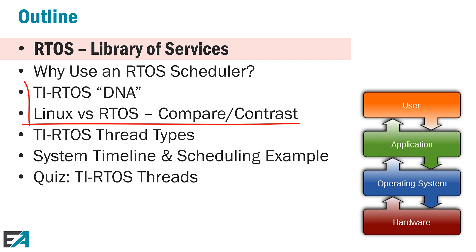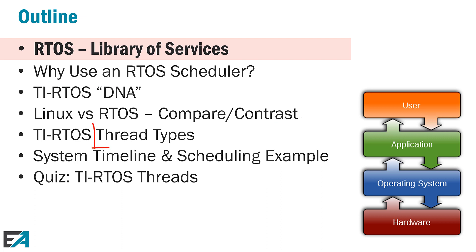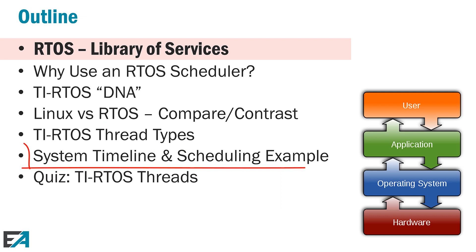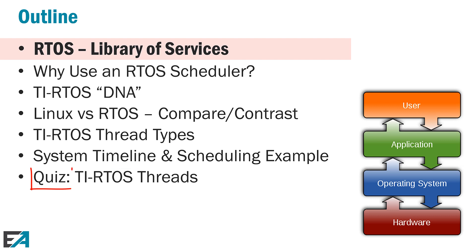Then we will compare and contrast TI-RTOS — or most likely any RTOS — versus Linux. Then we'll get into what are TI-RTOS's actual thread types, what are their names, and what are their group priorities. Then we'll look at the RTOS in action — seeing the different priorities being executed in preemption from the lowest priority thread to the highest priority thread. And then we'll end the chapter with a quiz on a motor control application. That scheduling example really helps bring the things together — it's nice to have that towards the end of the chapter.